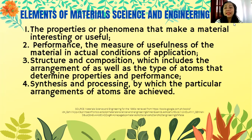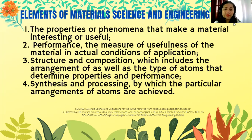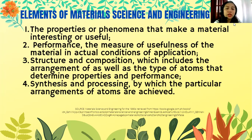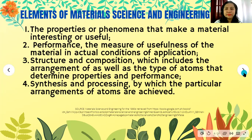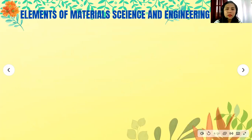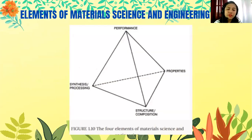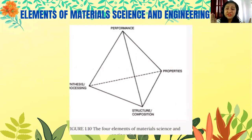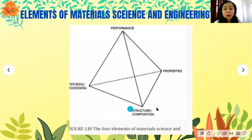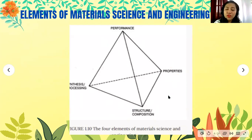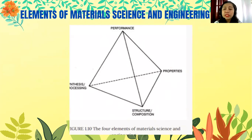That's why we have several tests for materials before we consider including them in a finished product or manufacturing. Number four is synthesis and processing, by which the particular arrangement of atoms is achieved. As you can see in the figure, the four elements of material science and engineering are synthesis, processing, structure, composition, properties, and performance. Just take note of these four elements.